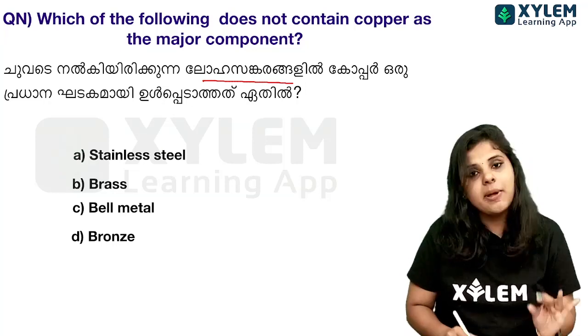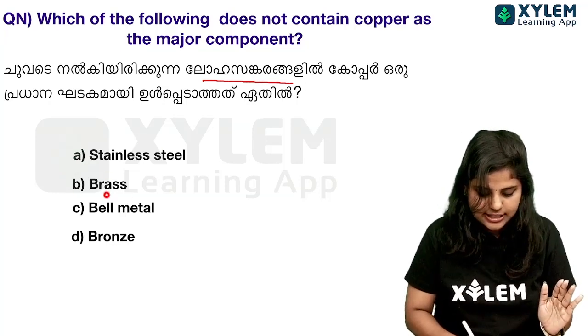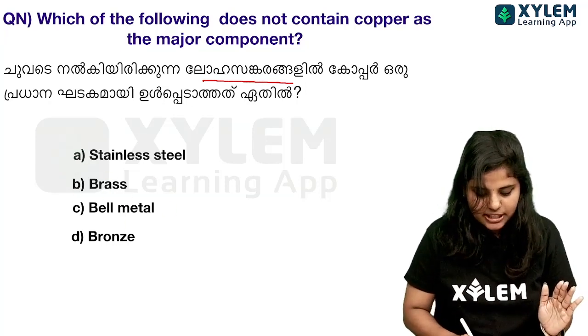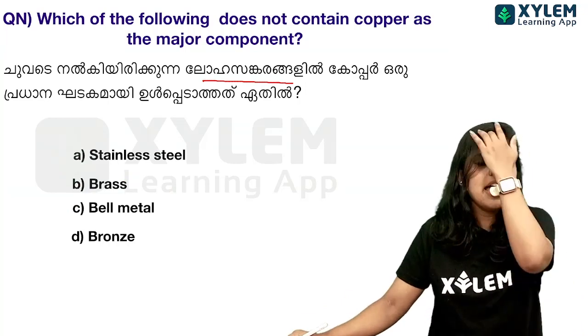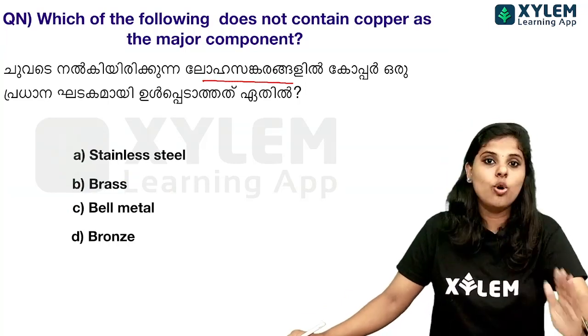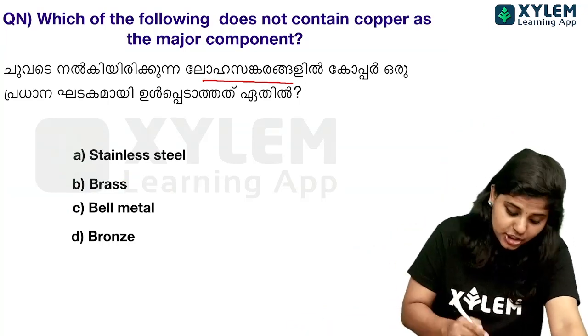Stainless steel, brass, bell metal, and bronze are all alloys — homogeneous mixtures of metals. For example, in brass, bell metal, and bronze, copper is the major constituent.